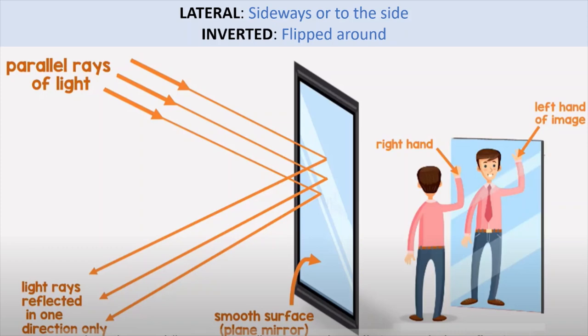What is lateral? Lateral is sideways and inversion is a flipping around. So whenever parallel rays of light fall on a mirror, the lights get reflected in one direction only.